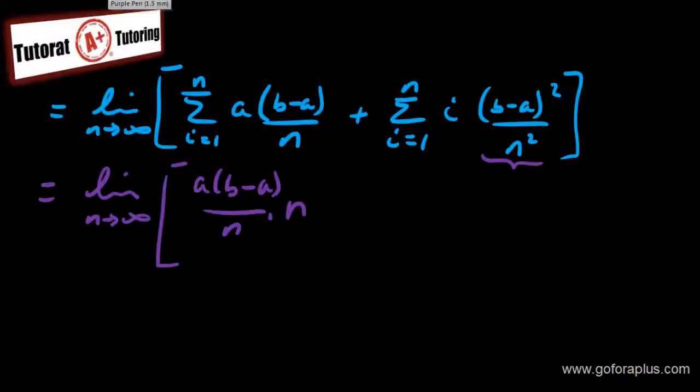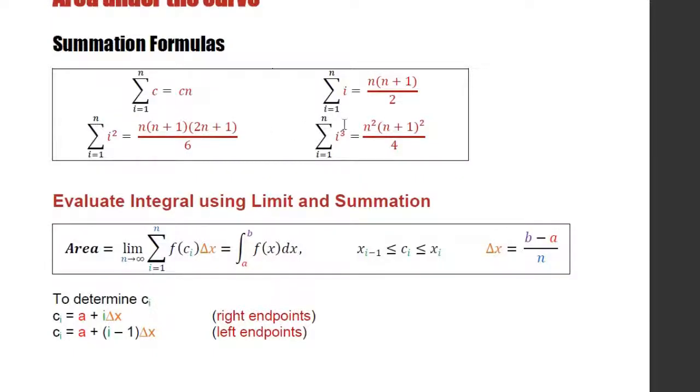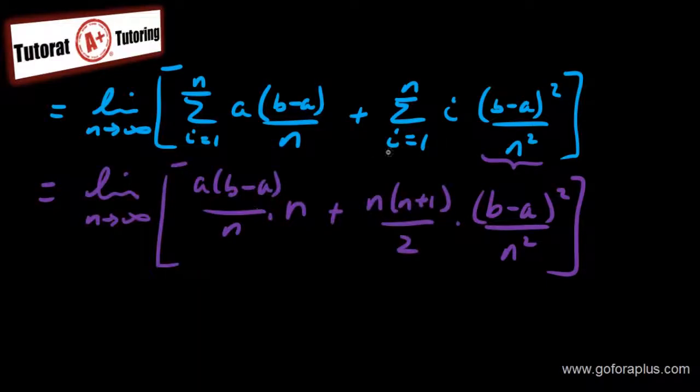So let me replace that. So plus n times n plus 1 over 2 times b minus a square over n square. If you want to know how these formulas come from, you should try to prove it. This is left for you to do as exercise. This is actually not very hard to prove for this one. You have to really know what you are doing with the summation. But anyway, this is another topic.